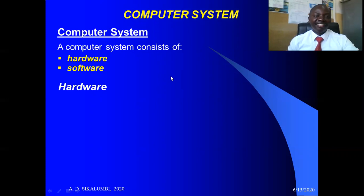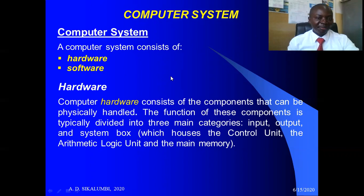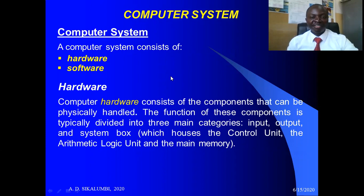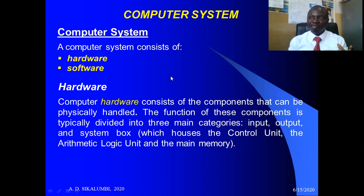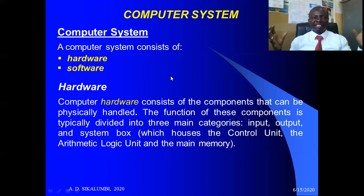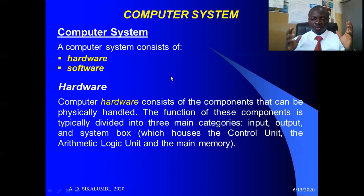The computer is made up of hardware and software. Hardware refers to the physical components of the computer that can be touched and manipulated — components that we are able to see, lift, touch, and manipulate to perform the activities that we want. The computer system's hardware components may be divided into three main categories: inputs, outputs, and the system box. When talking about the central processing unit, we can connect as many devices as we can, and all these devices may be divided into two: they are either input or output devices.